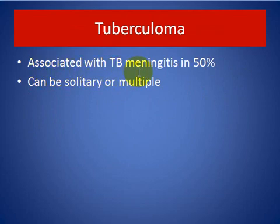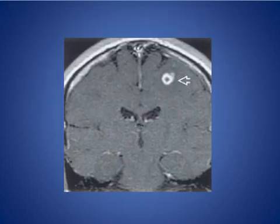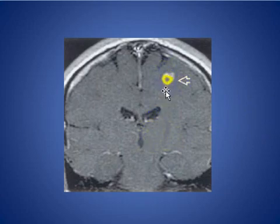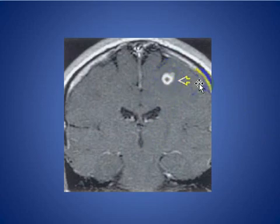Tuberculosis: T2/T3 meningitis in 50%, can be solitary or multiple. Here we see coronal T1-weighted imaging with a ring-enhancing region in the left frontal area in a patient with TB meningitis.